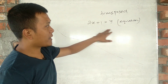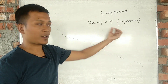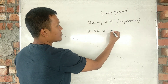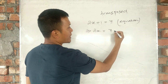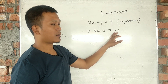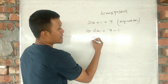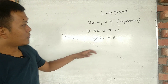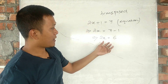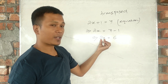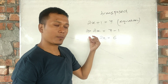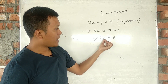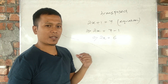So after transposing plus 1, its reverse operation is minus 1. This implies that 2x is equal to 7 minus 1. That gives us 2x equal to 6. We are simplifying the right-hand side.